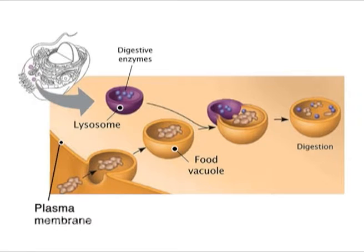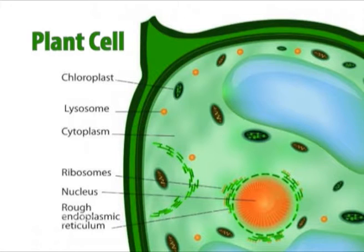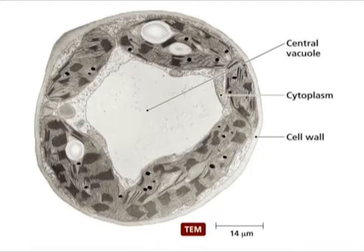Lysosomes function as the digestive system of the cell, serving both to degrade material taken up from outside the cell and to digest obsolete components of the cell itself. Interestingly, they are found in animal cells, while in plant cells, the same role is performed by the vacuole.